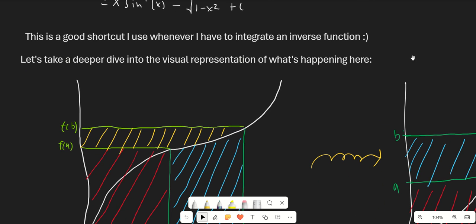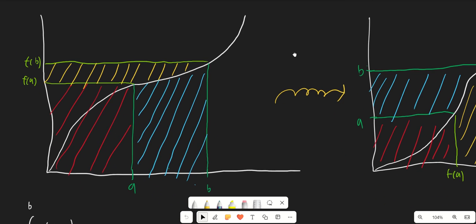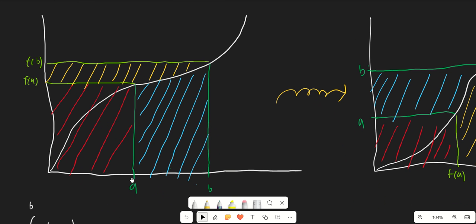Let's do a deeper dive into the visual representation of what's happening here. So here I have a graph of a function f(x). I've labeled points a and b on the x-axis and their corresponding points f(a) and f(b) on the y-axis. I've drawn the lines from a to b to the function and also from f(a) and f(b). This blue area is clearly the integral from a to b of f(x), just the area under the curve of f of x.